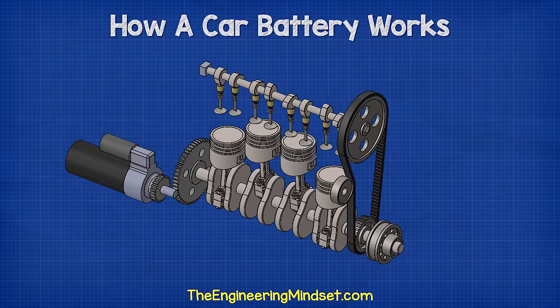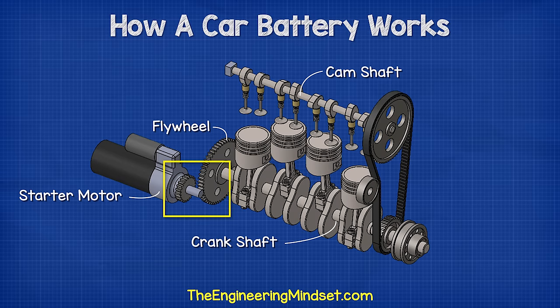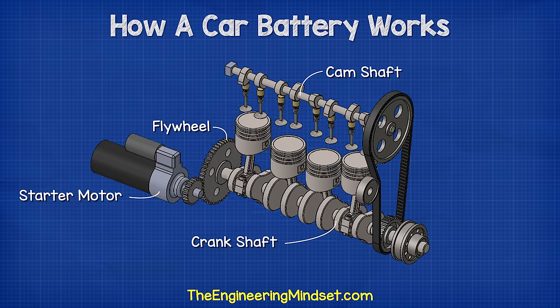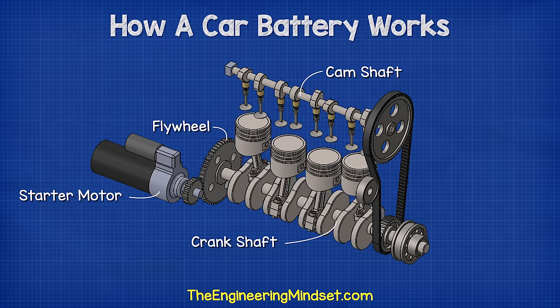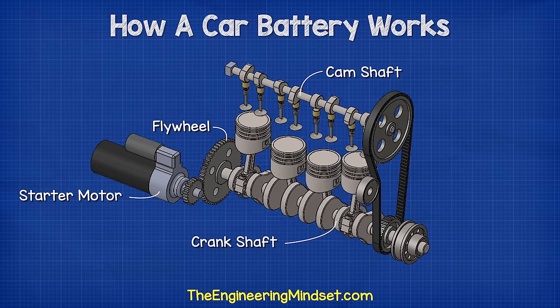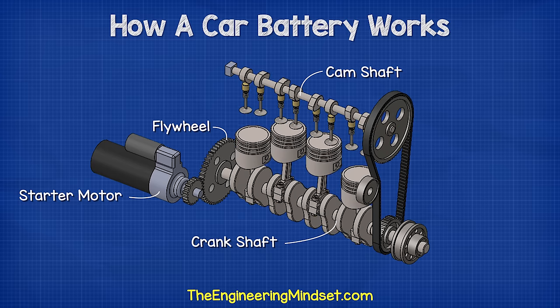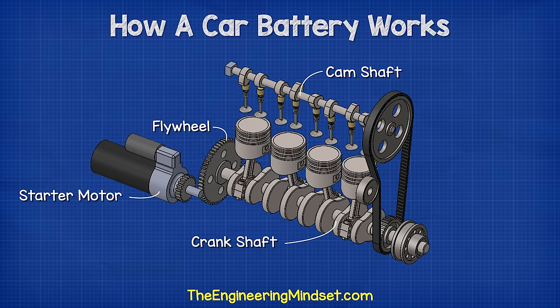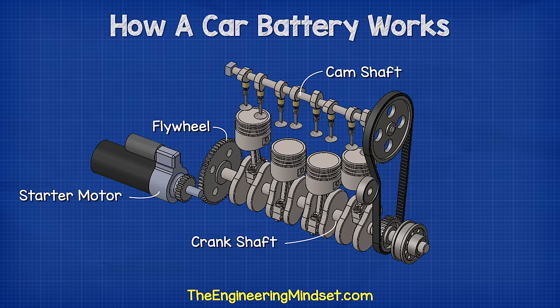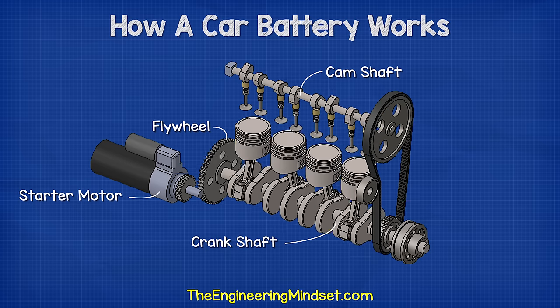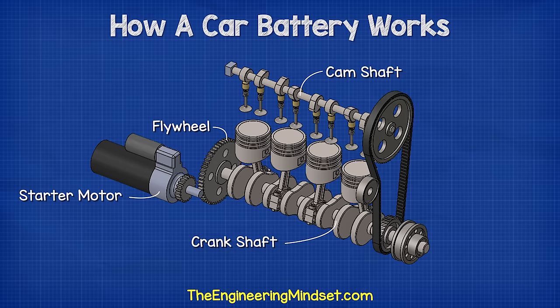The starter motor engages a small gear onto the flywheel of the engine. It turns this to turn the crankshaft, which starts the combustion engine. The small gear then disengages and the engine runs by itself.